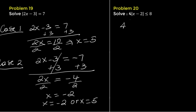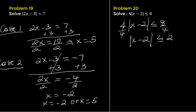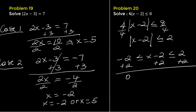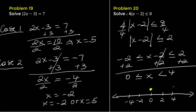Problem 20. Solve 4 times the absolute value of x minus 2 less than or equal to 8. Divide both sides by 4. The 4 on the left side cancels, giving the absolute value of x minus 2 less than or equal to 2. This expands to negative 2 less than or equal to x minus 2 less than or equal to 2. Add 2 to all sides: 0 less than or equal to x less than or equal to 4. Draw a number line with closed circles at 0 and 4, joined with a line segment.